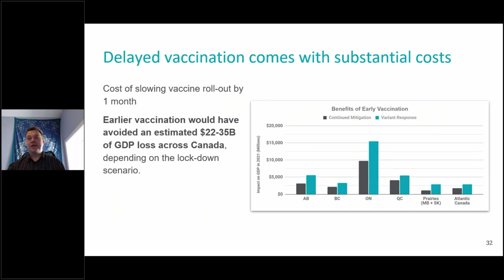We also considered different scenarios related to vaccination — the pace of vaccination. This is one way we can think about how costly the delays we observed in the vaccine rollout were. Of course, it's much quicker now, but initially there were a lot of delays, and we tried to put a dollar figure on the impact in terms of GDP across different provinces. That's just illustrating some use cases of this type of tool.